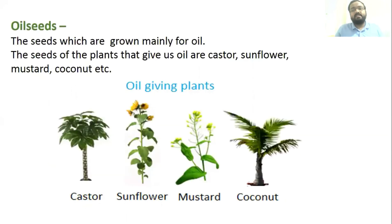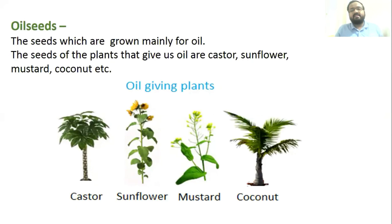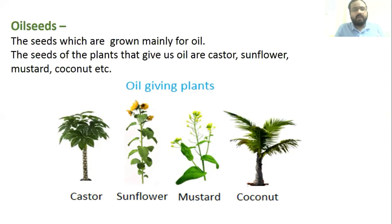Next is oil seeds. Seeds which are grown mainly for extracting oil are called oil seeds. The seeds of plants that give us oil are castor, sunflower, mustard, coconut, etc. We have all heard of sunflower oil, mustard oil, coconut oil, and castor oil — we extract oil from the seeds of these plants.